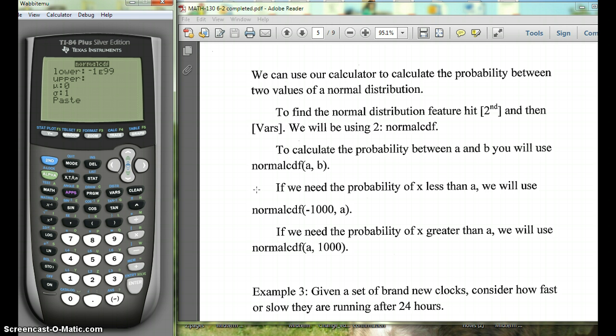If you want all the values less than a number, you want a really big negative number for the lower. So we can always put in something like negative 1,000. And then you'd go up to whatever your upper value would be, that A value. And if you want X is greater than some A, you'll put that A in your lower, and you'll use a big number for the upper, like 1,000.